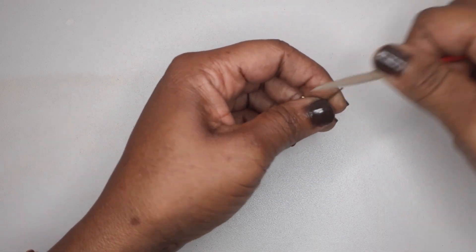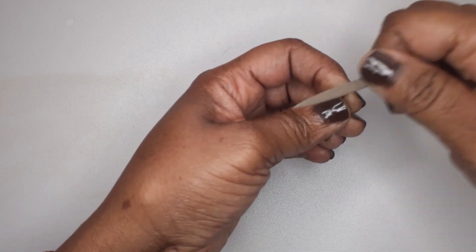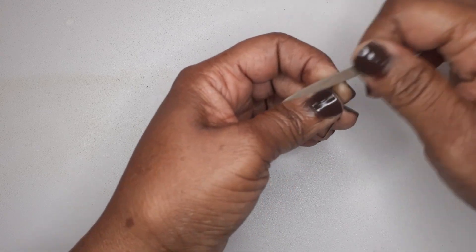And once I've done that, I go back in with a jeweller's file and I smooth the end of the ear wires.